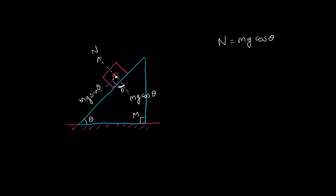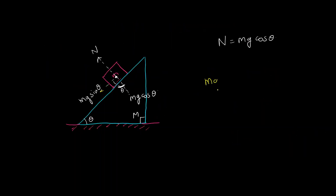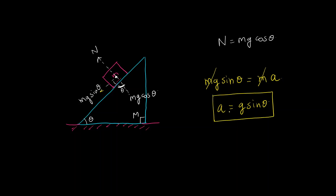The force parallel to the surface of the wedge, which is mg sinθ, is not balanced because there is no frictional force or any other force acting in that direction. So it is an unbalanced force — the net external force — and we equate it to ma: mg sinθ equals ma. Canceling m, we get the acceleration a equals g sinθ. Given appropriate initial conditions, you can now find the position of the block as a function of time.